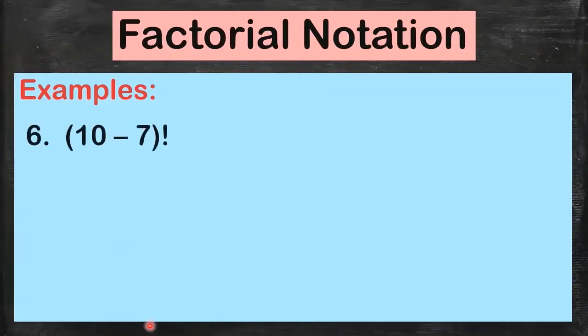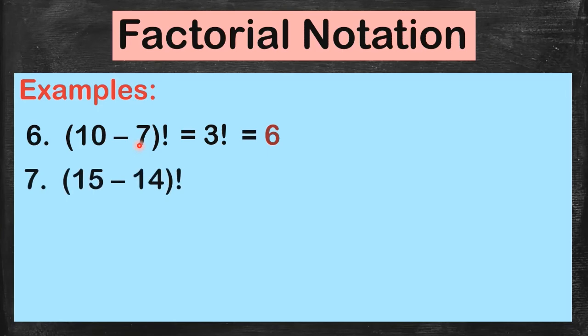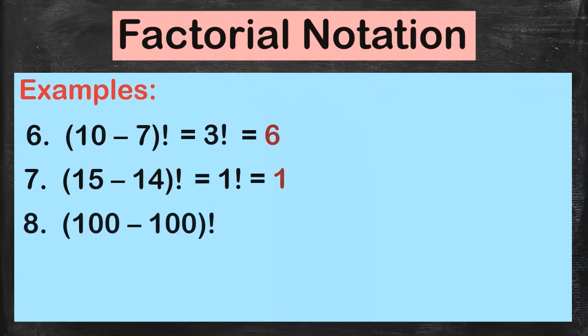More examples. Let me give you a warning. Hindi dini-distribute ang factorial over subtraction. Hindi ito equal sa 10 factorial minus 7 factorial. That's a big no. Actually, you don't distribute factorial over addition, subtraction, multiplication, division. Hindi siya dini-distribute. So paano yung gagawin? I-minus nyo muna to. What is 10 minus 7? 3. So you're going to have 3 factorial, and you evaluate it. It's 3 times 2 times 1. You will get 6. What is 15 minus 14 factorial? It is 1 factorial, and what is 1 factorial? 1. Next example. What is 100 minus 100 factorial? 100 minus 100 is 0. So we have 0 factorial. And again, what is 0 factorial? It is equal to 1.